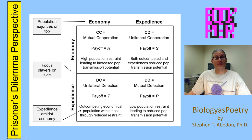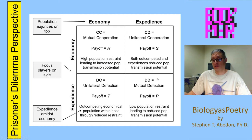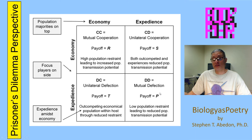Recall that with a prisoner's dilemma, up here in the upper left-hand corner, we have mutual cooperation — a CC interaction with the payoff of R for reward for mutual cooperation. Down here in the lower right-hand corner, we have mutual defection, a DD interaction, where the payoff is P, which stands for punishment for mutual defection.